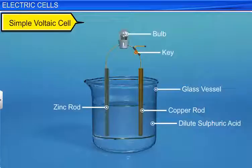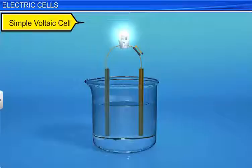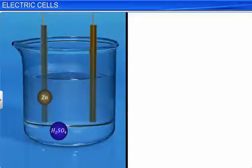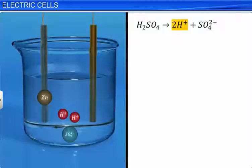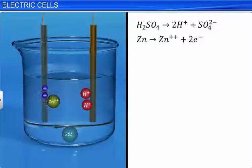The dilute sulfuric acid in the vessel is called the electrolyte. When the key is pressed, we observe that the bulb glows. This shows that the chemical reaction occurring in the electrolyte causes current through the connecting wires, lighting up the bulb. A series of chemical reactions takes place in the electrolyte. Dilute sulfuric acid breaks up into positive hydrogen ions and negative sulfate ions — this is called dissociation. The hydrogen ions move towards the copper rod. The zinc atoms from the rod ionize, losing two electrons per atom to release positive zinc ions into the solution.